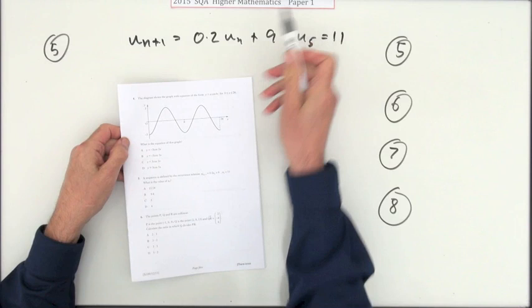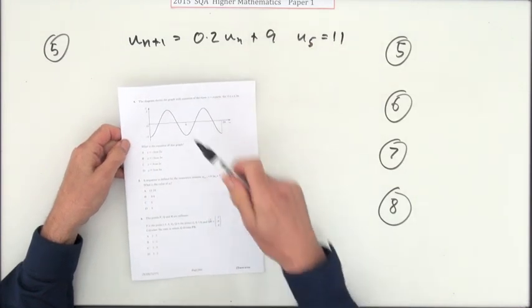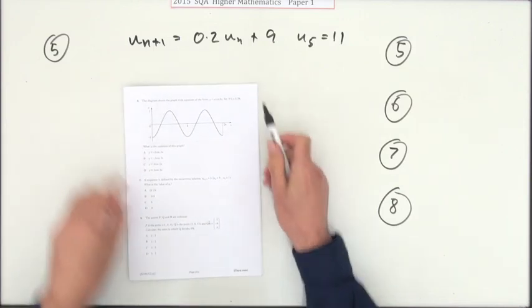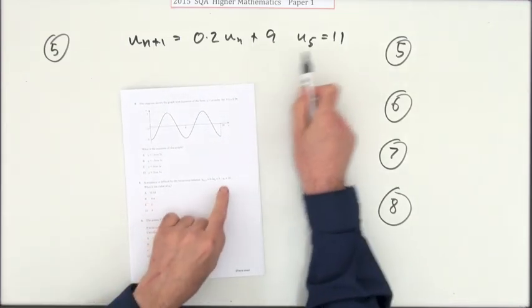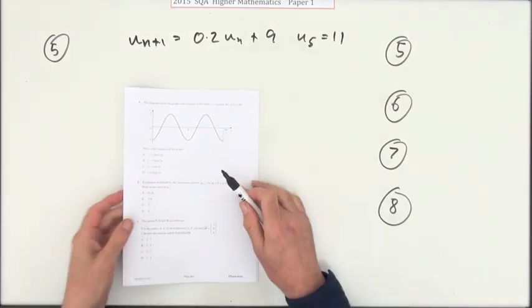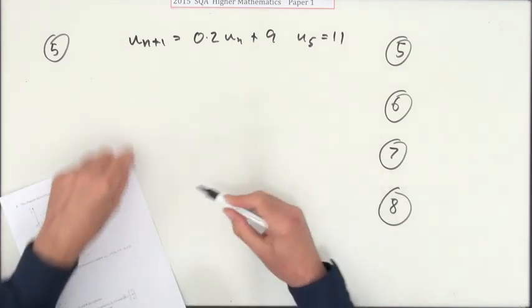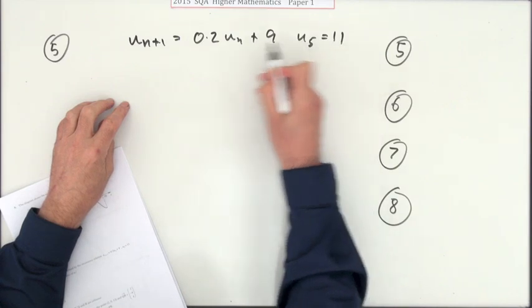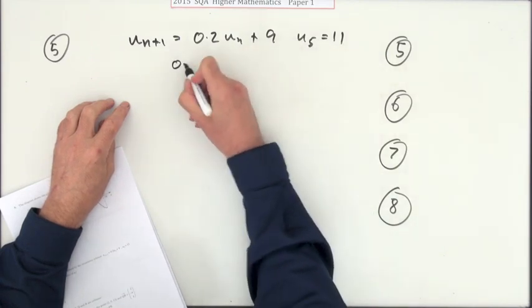So number five then from paper one, from the multiple choice in the 2015 old higher. We've got this recurrence relation. It gives you u5 and asks you for u3. That's a bit nasty, so you're gonna have to work backwards. So we're gonna have to see you'd have got u5 from u4, so that means that